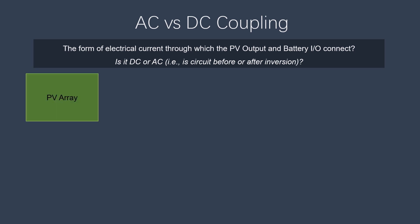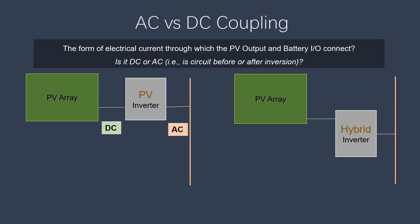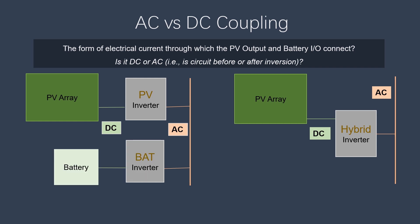Let's look at both couplings side by side. On the left, we have a PV array connected to a PV inverter, with DC and AC components. A battery is connected but it cannot be connected straight to the PV inverter — it must go through a battery inverter, and therefore the connection between the PV and battery is through an AC bus bar.